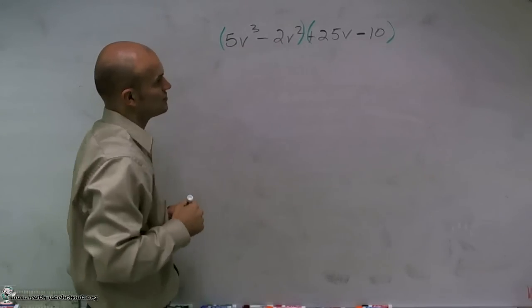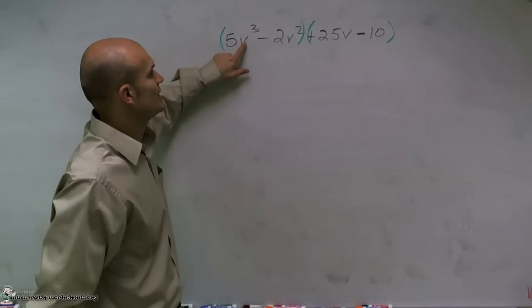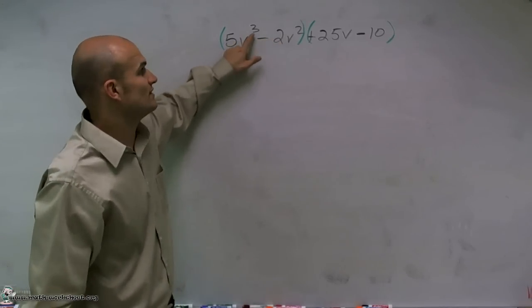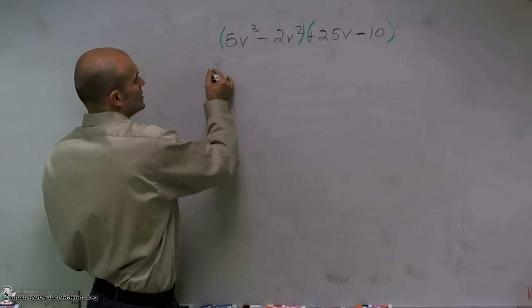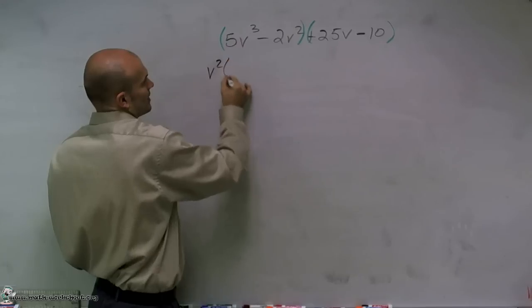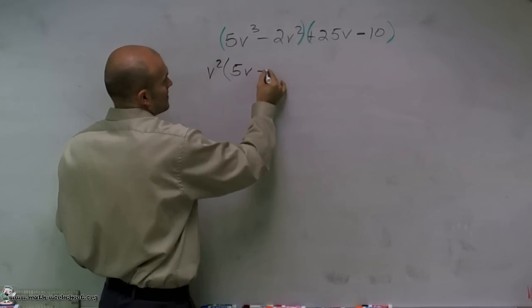So if I look at my first two terms, I need to say, well, what do these two terms share in common? They share a V squared. This one has a V cubed. Here's a V squared. So the greatest common factor of my two terms is a V squared. So I'll factor that out, and I'll be left with 5V minus 2.